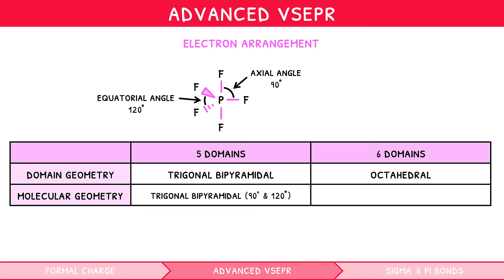For octahedral, the domains form an octahedron. As a result, the bond angles are all 90 degrees, for example, SF6.